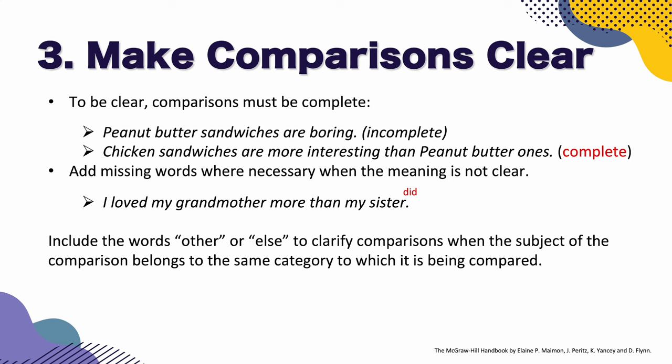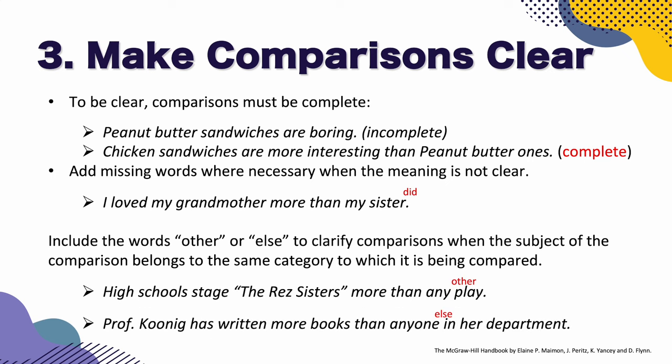Include the words 'other' or 'else' to clarify comparisons when the subject of the comparison belongs to the same category to which it is being compared. For example: 'High school staged The Sisters more than any play' — it's better to add 'other': 'High school staged The Sisters more than any other play.' Or: 'Prof. Kooning has written more books than anyone in the department' — it's better to say 'anyone else in the department.' It sounds much better.